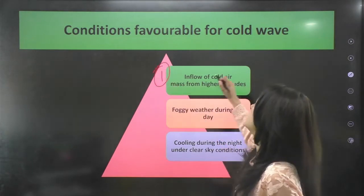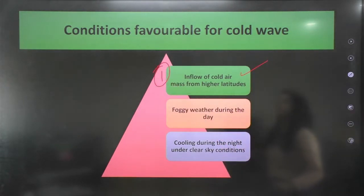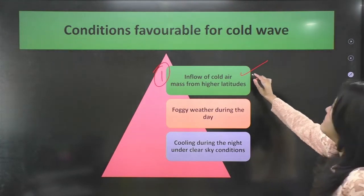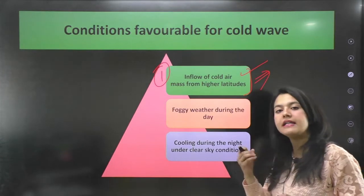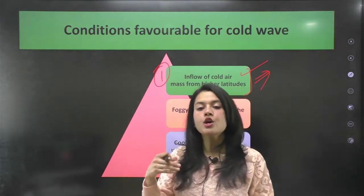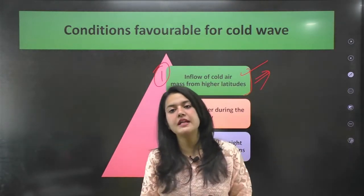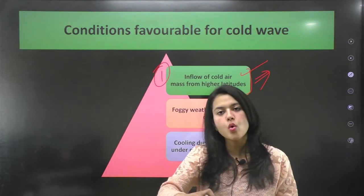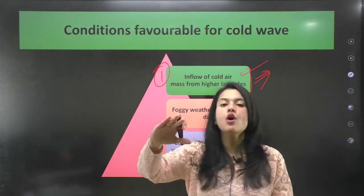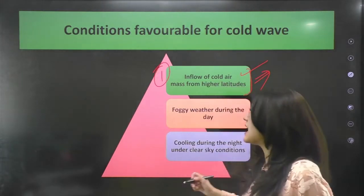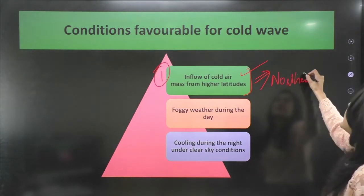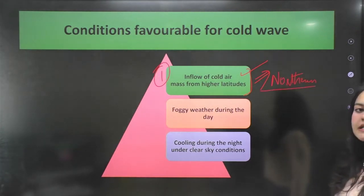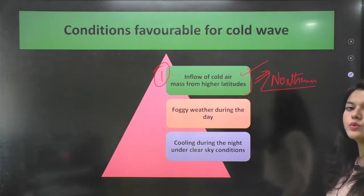Now let's look at the conditions favorable for cold waves. The first is the inflow of cold air mass from the higher latitudes. In the hilly areas, there are western disturbances, and because of these, cold air masses are created. This cold air mass then passes over the northern plains, and people there experience the cold wave.